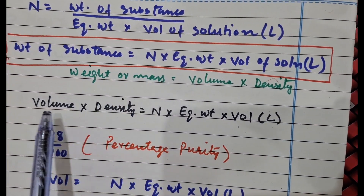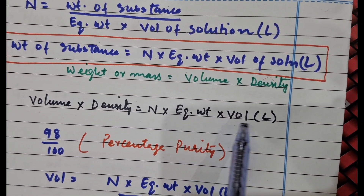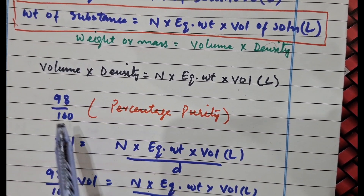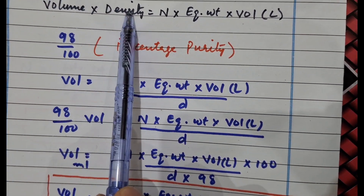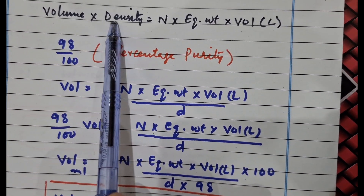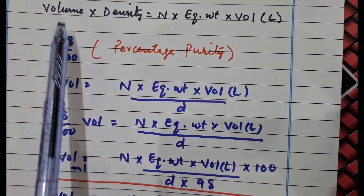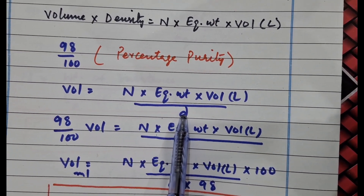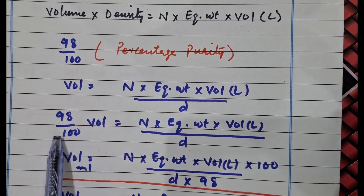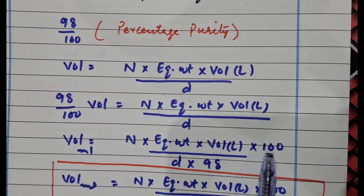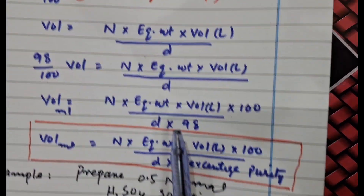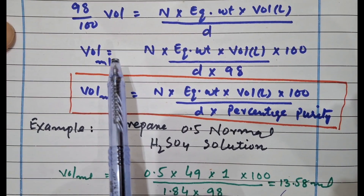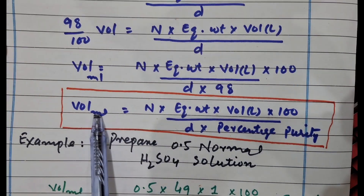Volume into density equals normality into equivalent weight into volume. Since H₂SO₄ is 98% pure, we incorporate its percentage purity. Taking density to the other side, we get volume equals normality into equivalent weight into volume in liters divided by density. After accounting for the 98% purity, 100 goes to one side and 98 to the denominator. This gives the final equation to calculate the volume required to prepare 0.5 normal H₂SO₄ solution, where 98 can also be written as percentage purity.